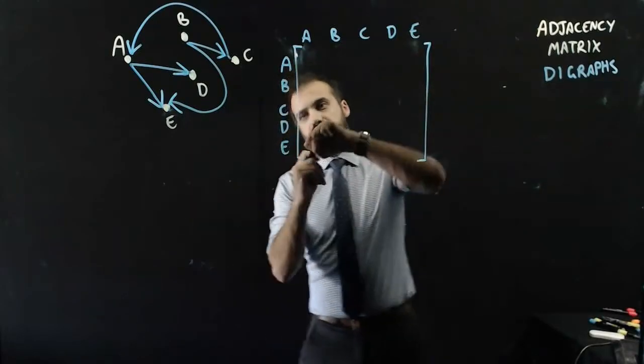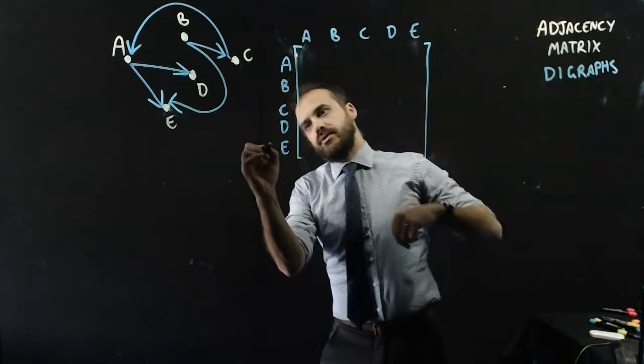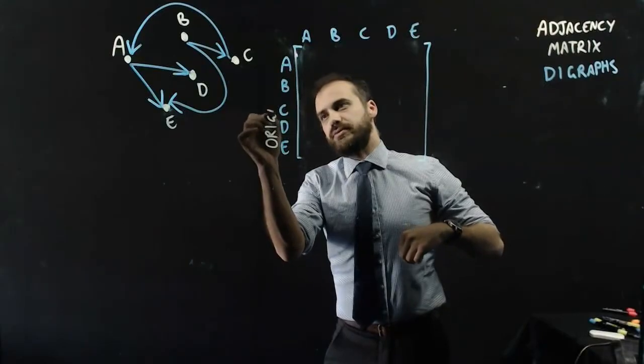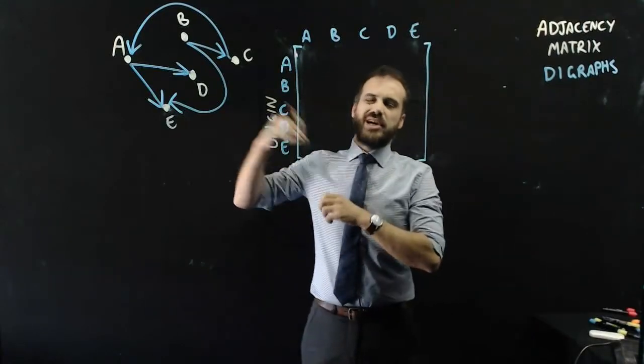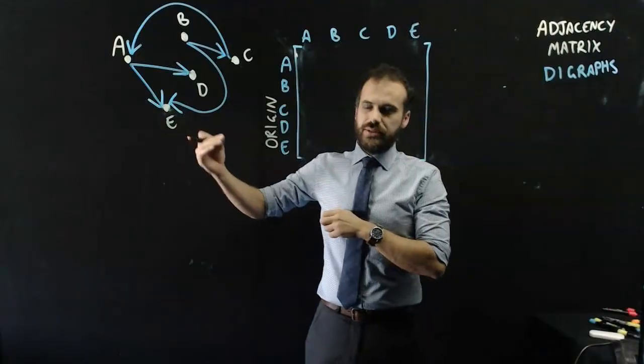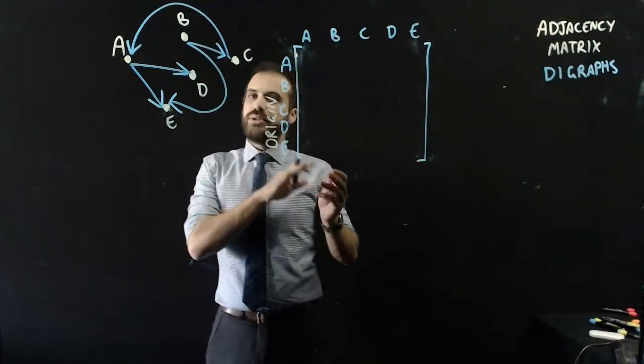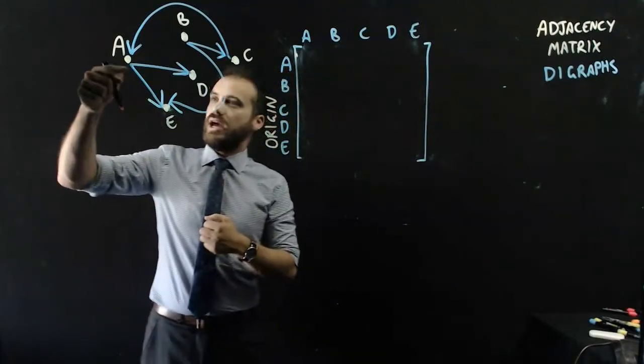This row here, we're going to write as the origin. That means that's where the tail of the arrow is. So now we can do it directional. A,